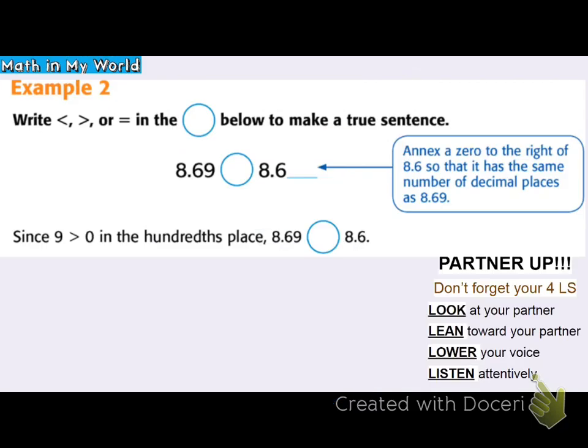Alright, example two — math in my world. Write less than, greater than, or equal to in the circle below to make a true sentence. The two values to compare are 8 and 69 hundredths and 8 and 6 tenths.